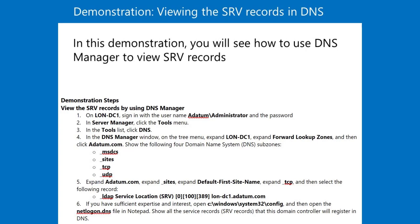Demonstration steps — view the SRV records by using DNS Manager. Step 1: On londc1, sign in with the username adatum\administrator and the password. Step 2: In Server Manager, click the Tools menu. Step 3: In the Tools list, click DNS. Step 4: In the DNS Manager window, on the tree menu, expand londc1, expand Forward Lookup Zones.